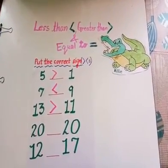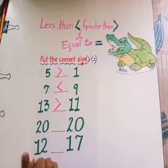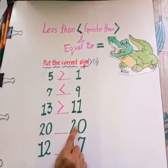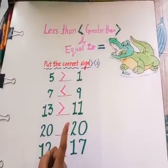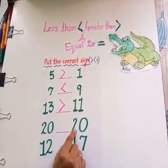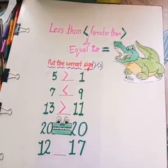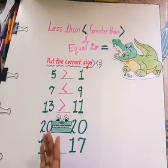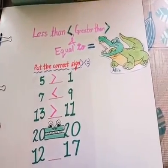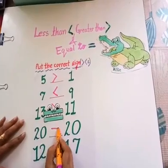Now tell me children, which number will Ellie eat? This number 20 or this number 20? See, remember children, if the numbers are the same, Ellie gets confused and she looks towards us, and her mouth looks like this. So if the numbers are the same, we use equal sign.